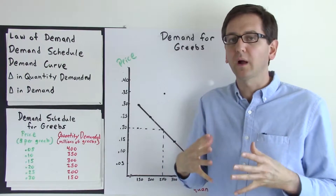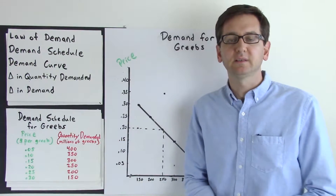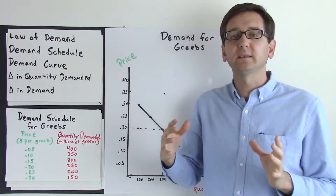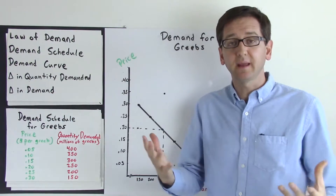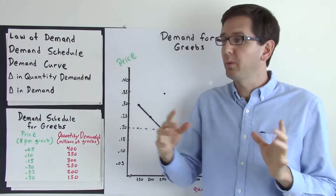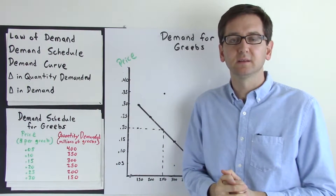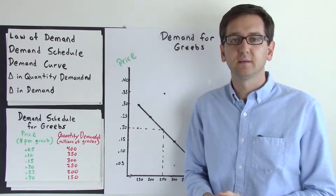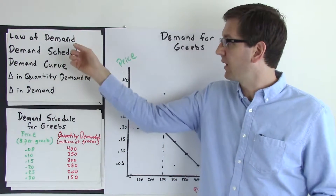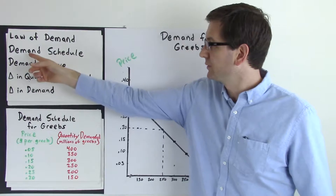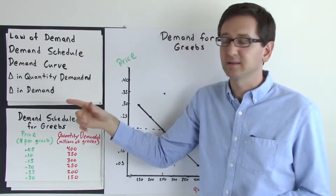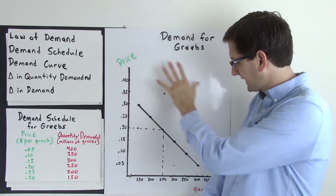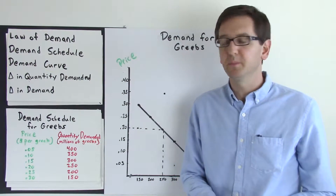As price decreases, our quantity demanded increases. On the other side of it, as price increases, our quantity demanded decreases. As prices go up, we want less of things; as prices go down, we want more. This concept, the law of demand, can be illustrated through a demand schedule and through the demand curve, which is our next economic model that we will be building.